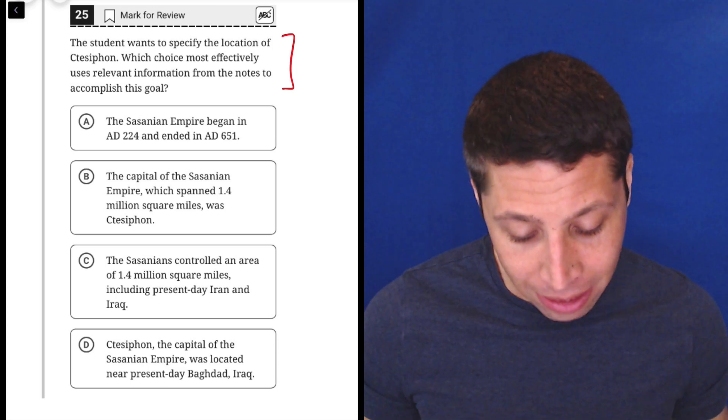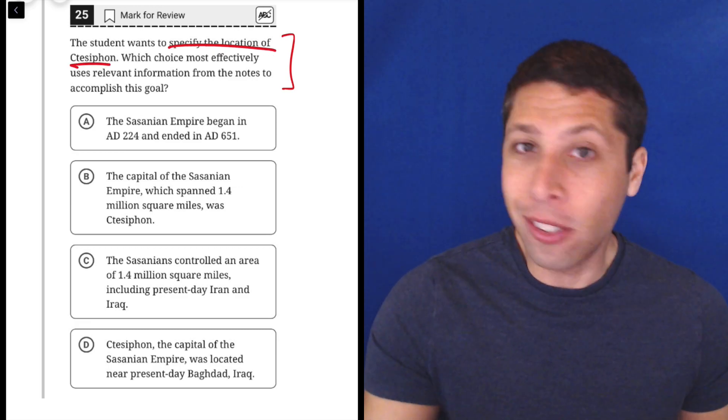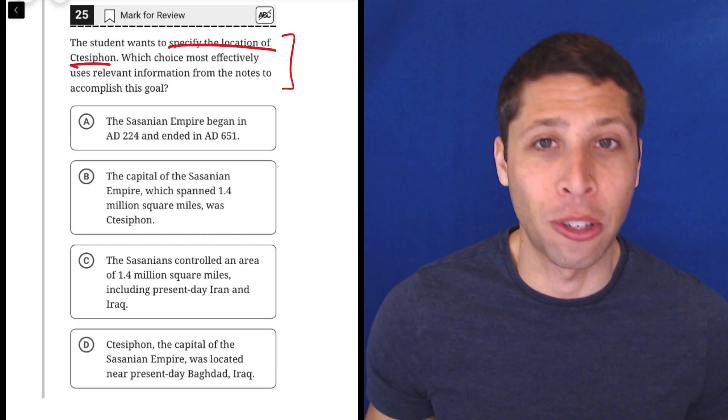So let's just dive in and I think you'll see what I mean. The student wants to specify the location of Ctesiphon, right? So my sentence needs to have the location. Which choice most effectively uses relevant information from the notes to accomplish this goal? That part's always the same.